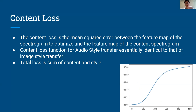The content loss is the mean squared error between the feature map of the spectrogram we're optimizing and the feature map of the content spectrogram. Counter-intuitively, the content loss increases over 500 iterations. The reason is that our total loss is the sum of the content and style loss, and since we are directly optimizing on the content spectrogram, we start at a loss of zero. As we optimize based on the total loss, which also cares about the style, we change the spectrogram, moving it further and further away from the original content spectrogram.